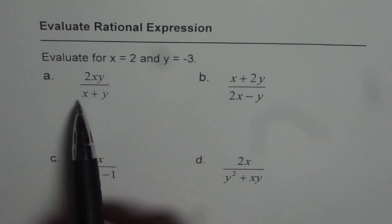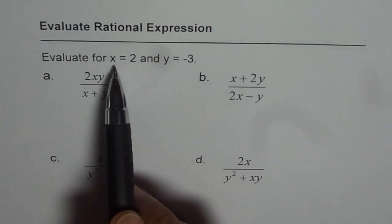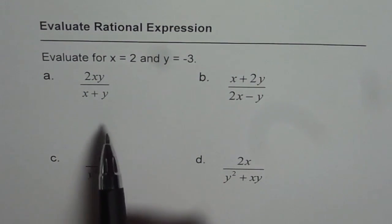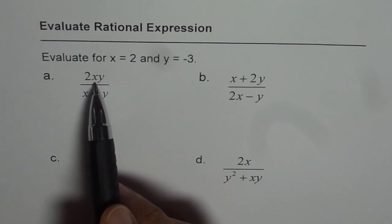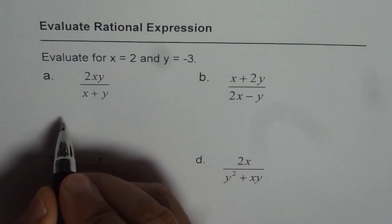We have 2xy divided by x plus y. x is given to us as equal to 2, y is minus 3. So, substitute x as 2 and y as minus 3. What do you get?